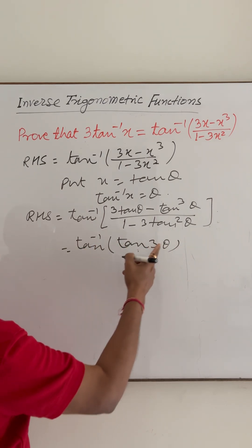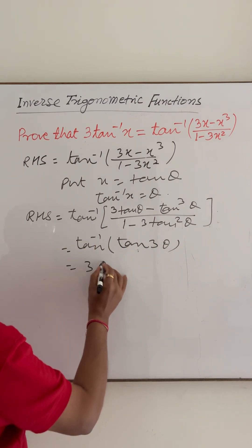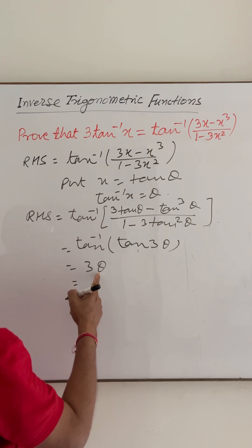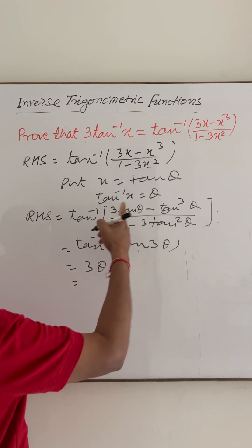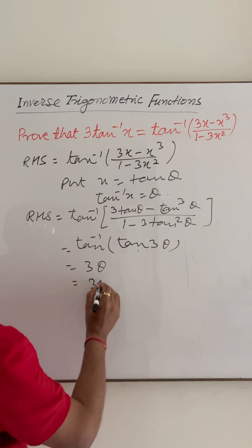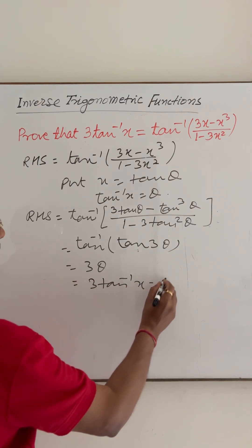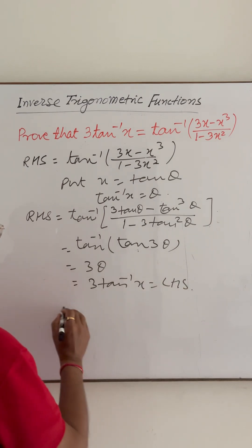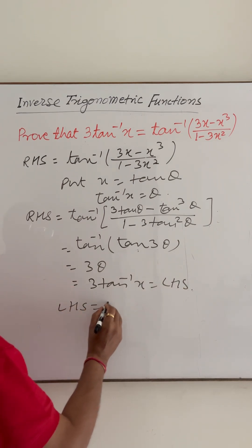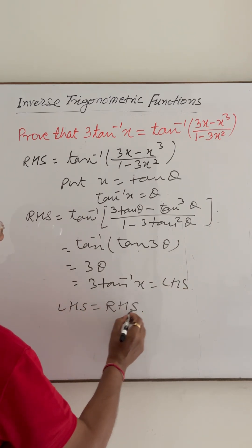So tan inverse of tan 3 theta is equal to 3 theta. Putting the value of theta here, theta is tan inverse x. So this is 3 tan inverse x. This is left-hand side. So we are getting here left-hand side is equal to right-hand side.